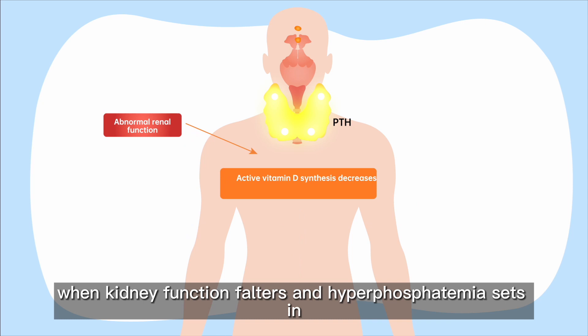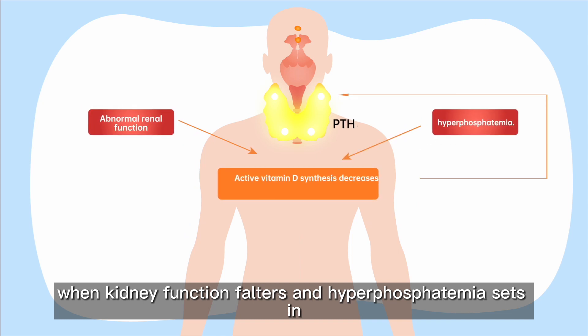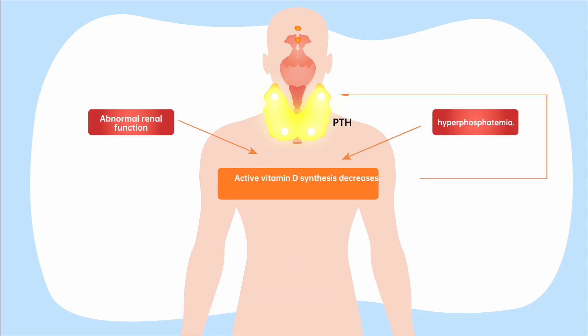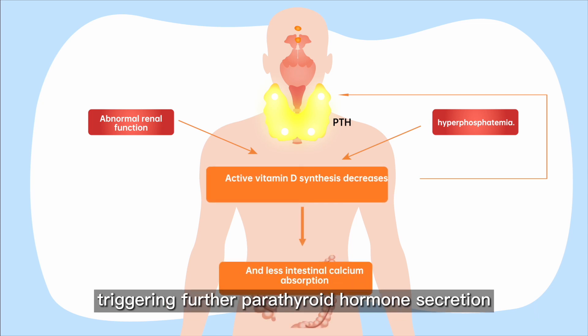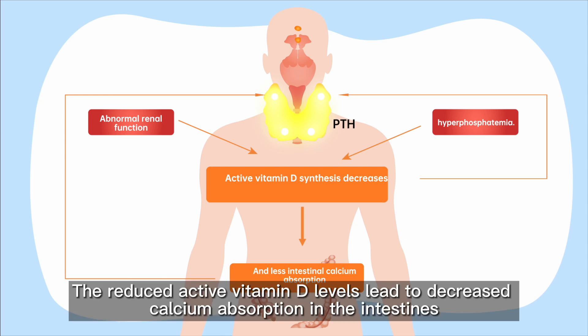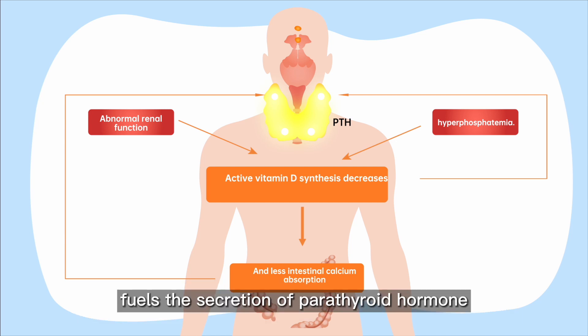Additionally, when kidney function falters and hyperphosphatemia sets in, the synthesis of active vitamin D declines, triggering further parathyroid hormone secretion. The reduced active vitamin D levels lead to decreased calcium absorption in the intestines, which in turn fuels the secretion of parathyroid hormone.